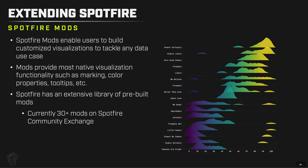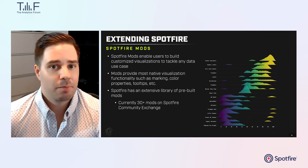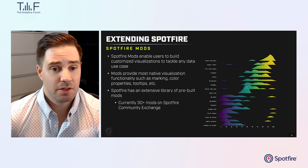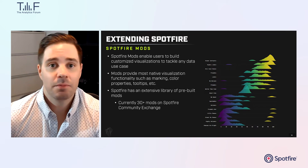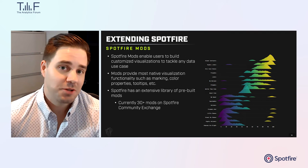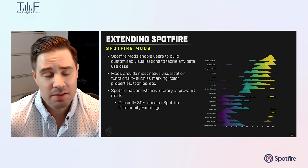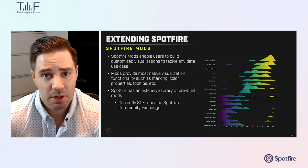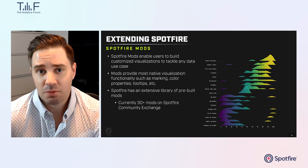Ridgeline plots are great for showing distributions of a numeric value across several groups of categorical data, drawing a density curve across each subset of your categorical data. They're very powerful for understanding how distributions change through time or across different categories. This is naturally one of the first mods we created internally.